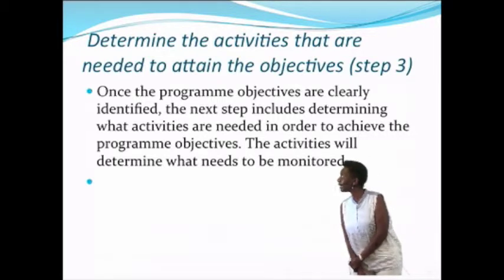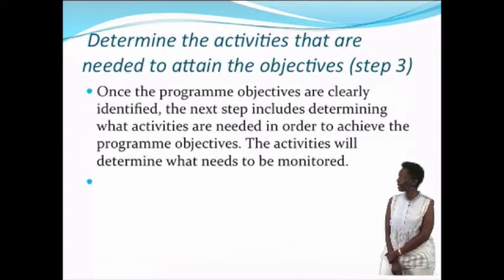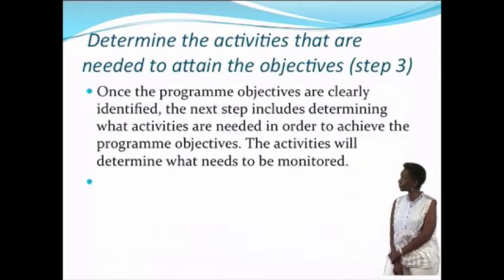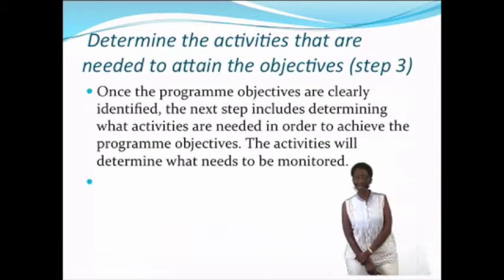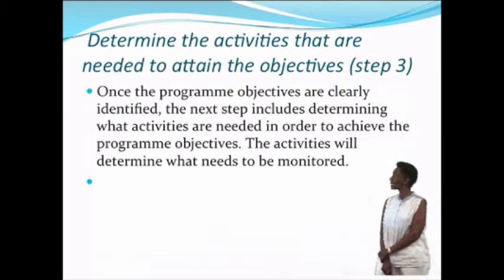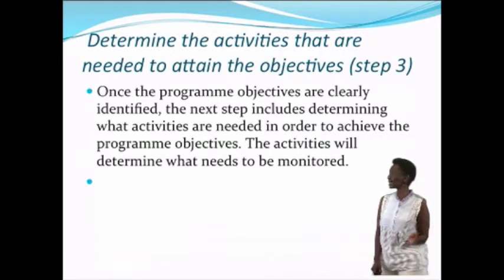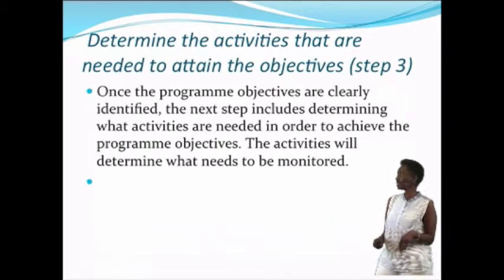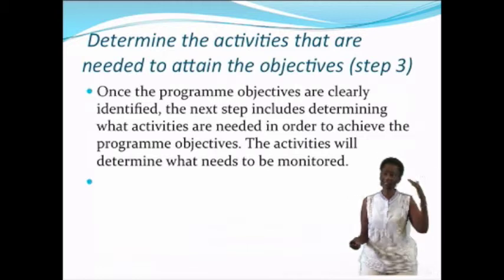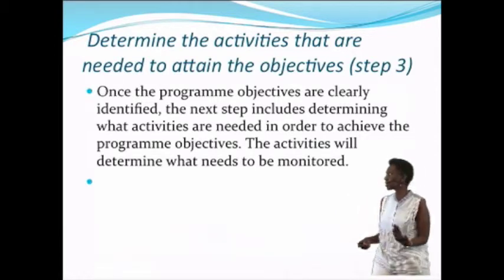Step number three: you have to determine activities that are needed to attain the objectives. Once the program objectives — the SMART objectives — are clearly identified, the next step includes determining what activities are needed to achieve them. These activities will determine what needs to be monitored. You take the objectives, list all the activities with other stakeholders, and decide: if you want to increase the number of people coming for HIV testing, what activities are needed? Is it an awareness campaign? Is it education of the people who will deliver it?